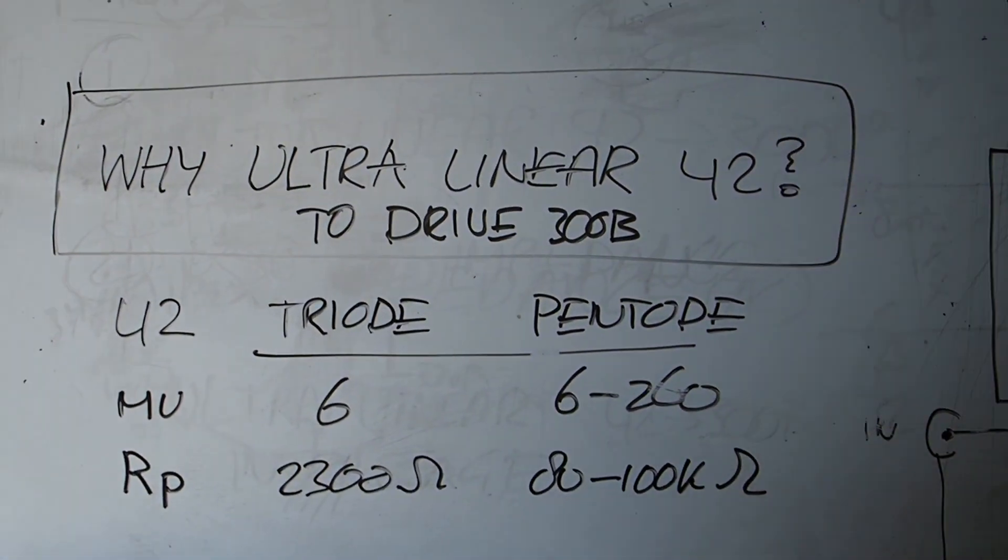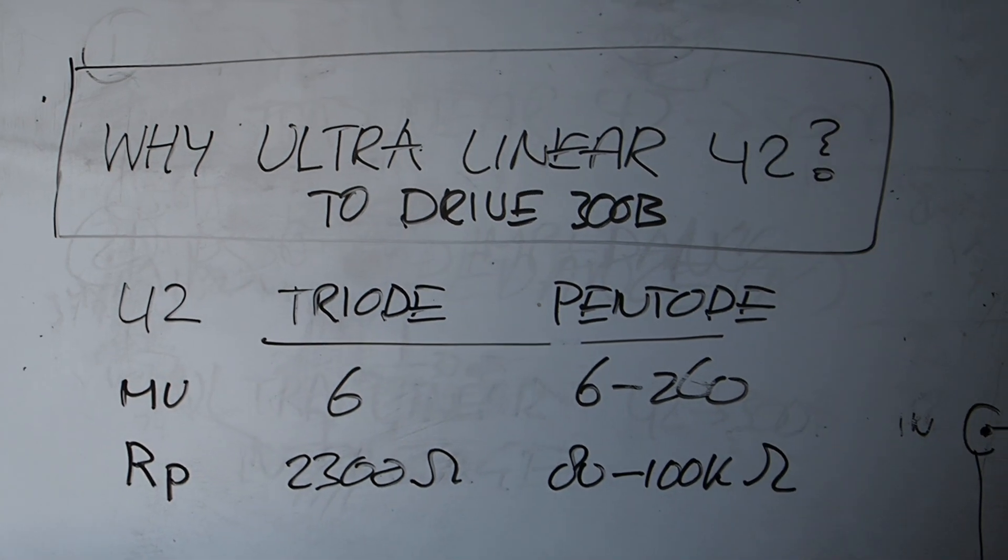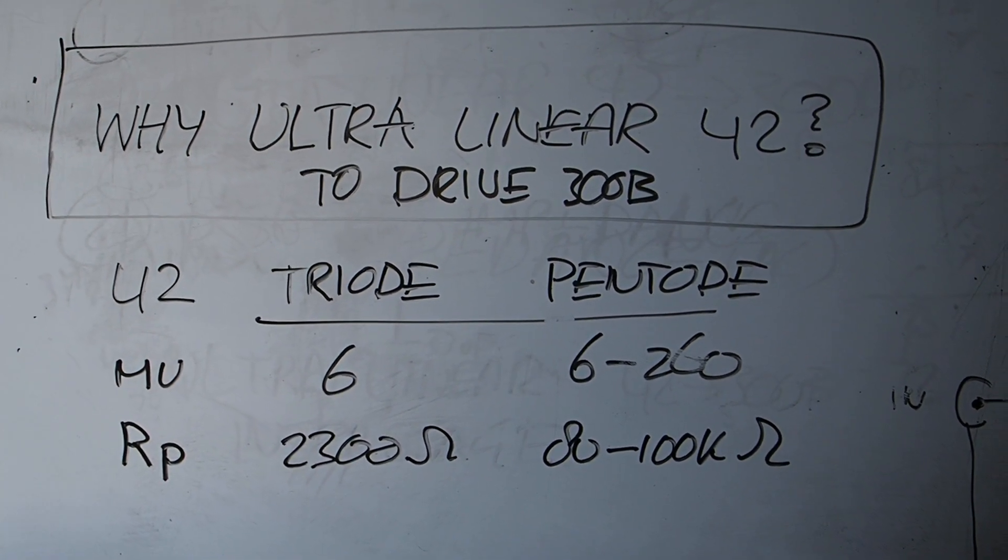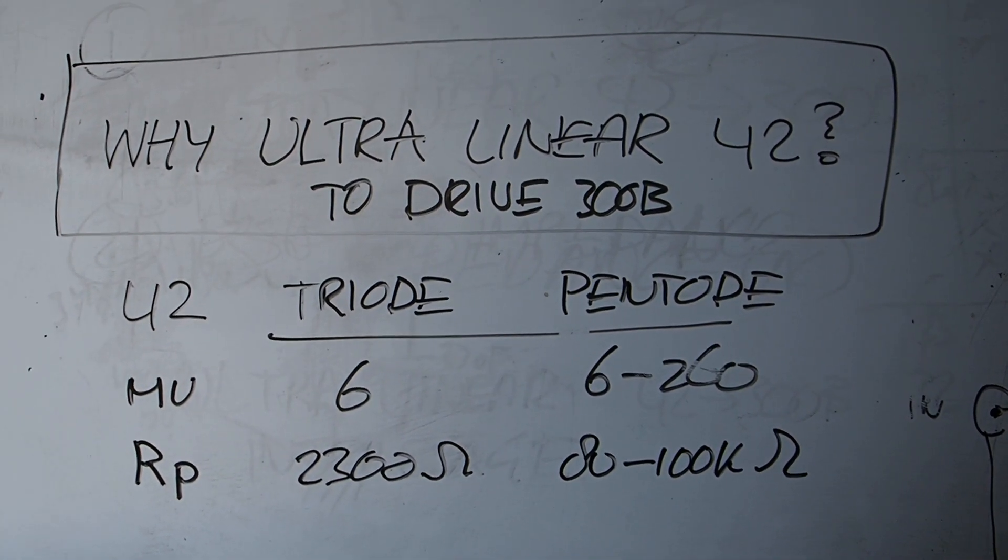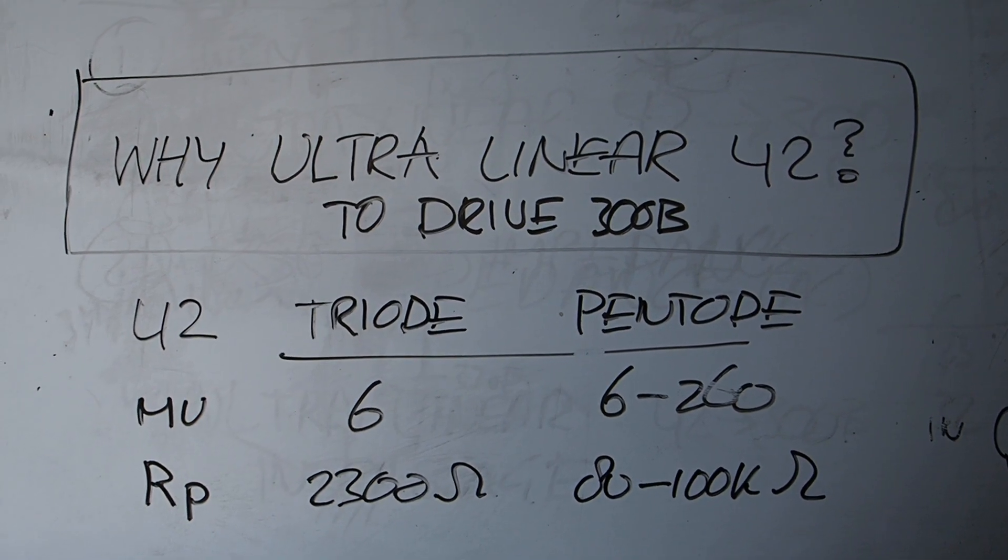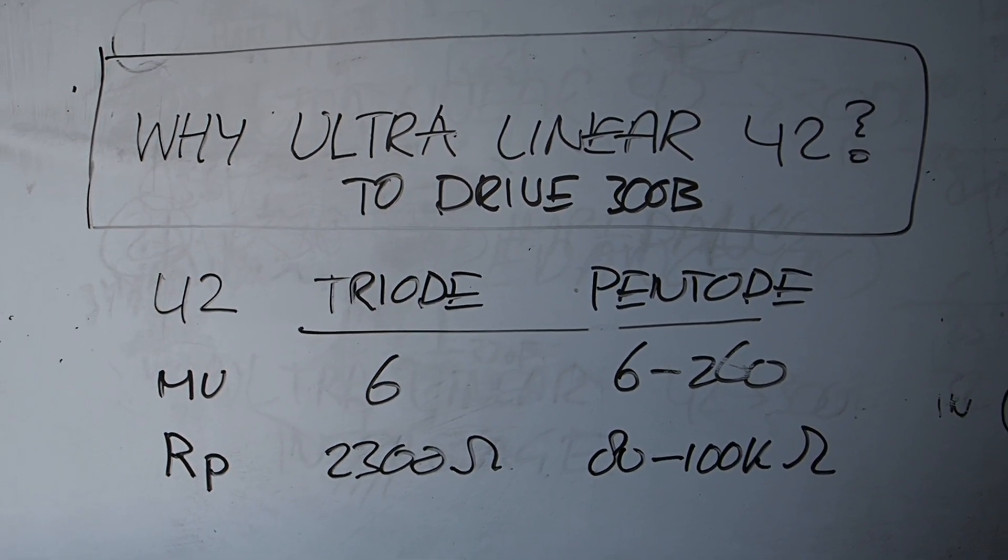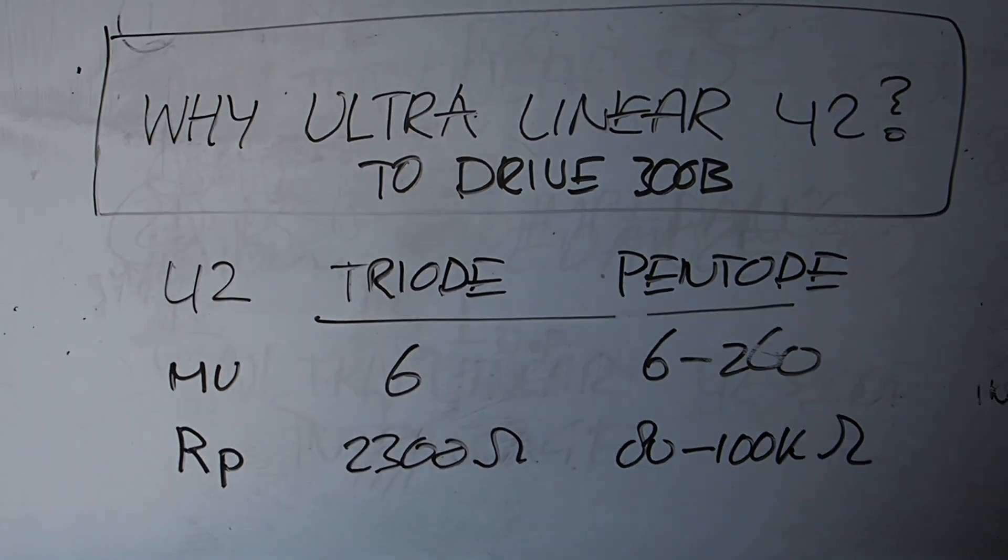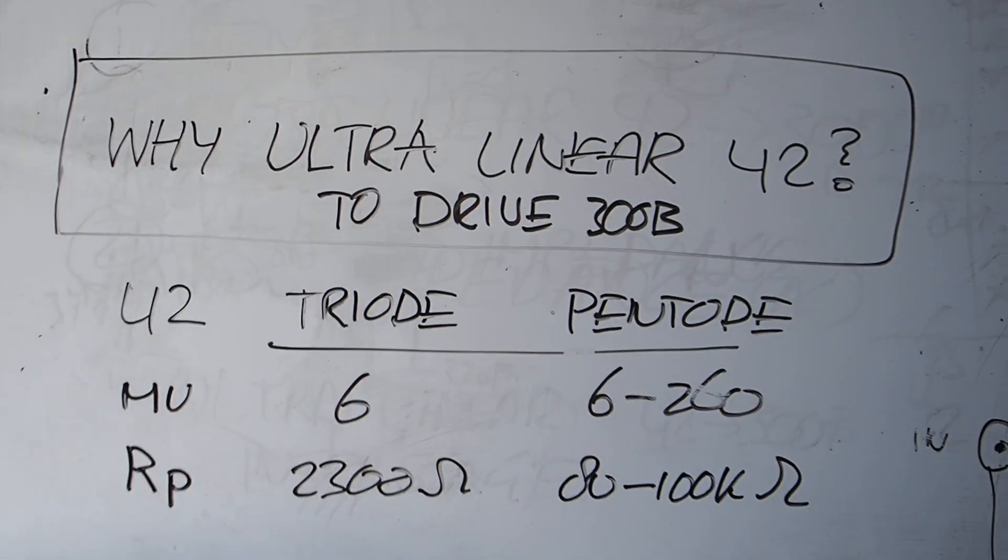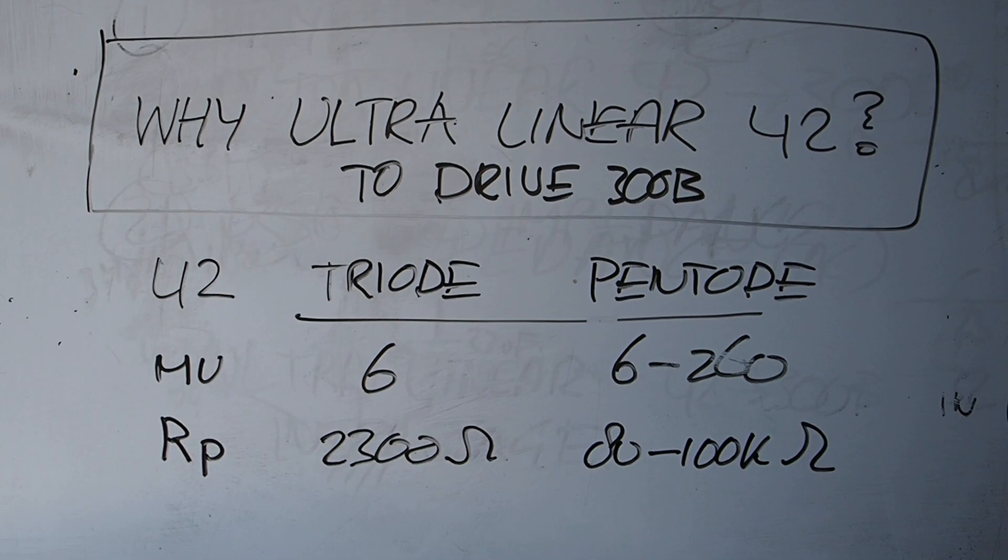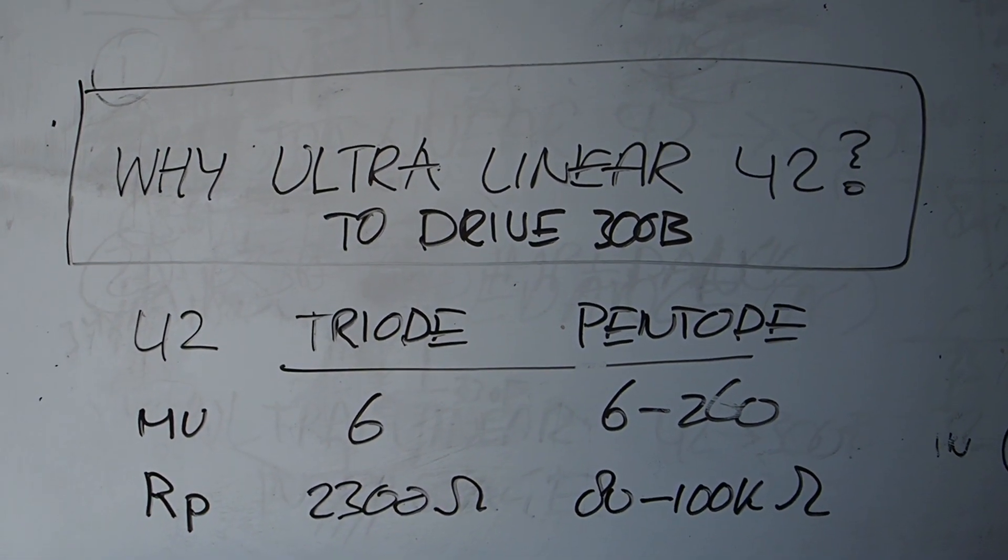Now the Type 42 can easily run 30-40 milliamps over its plate. It can dissipate probably 16-20 watts or something. I don't know what it is exactly, it's not on the data sheet. But that was one of the ideas.